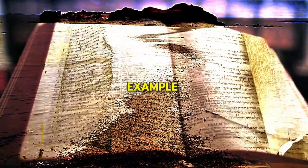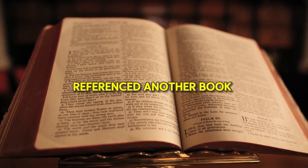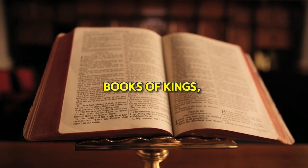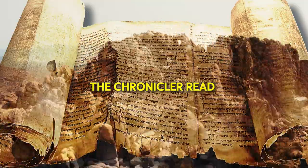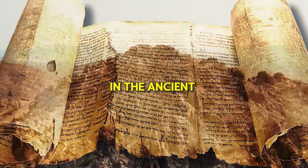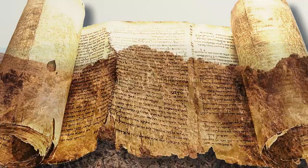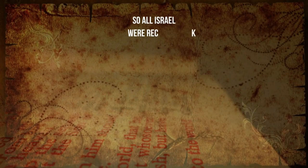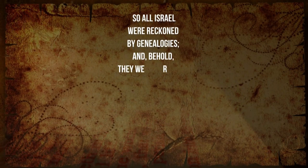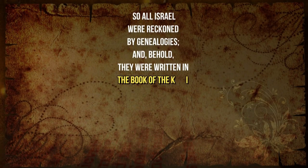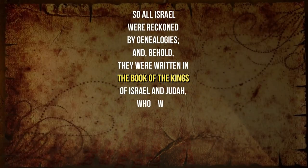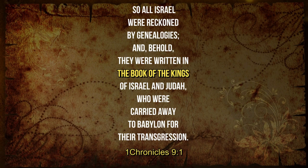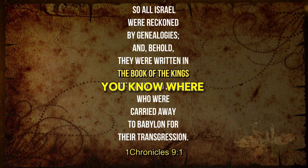Consider another example. The chronicler also referenced another book, the Book of Kings. In your Bible, you have two books of Kings, one and two. The chronicler read the same book in the ancient times when the book was still fresh, and the following was its reference: 'So all Israel were reckoned by genealogists, and behold, they were written in the book of the kings of Israel and Judah, who were carried away to Babylon for their transgression.' I can go on and show you many examples, but I guess you know where the trend is going.